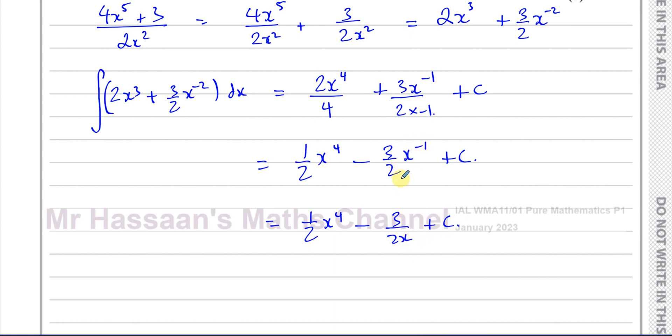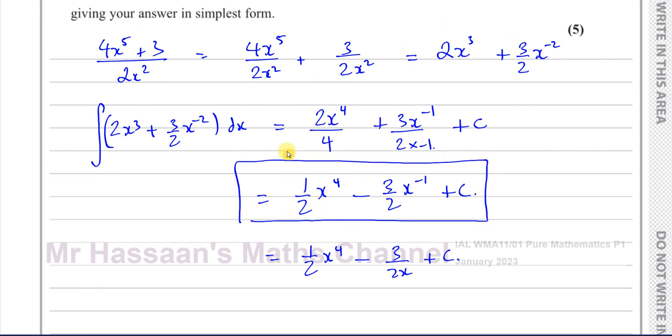Because that x to the power of minus 1 can be written in the denominator. I could also write this as x to the power of 4 over 2 if I want to. Whichever way, that's fine. If you leave your answer like this, it's perfectly good. And you'll get the full marks for it.